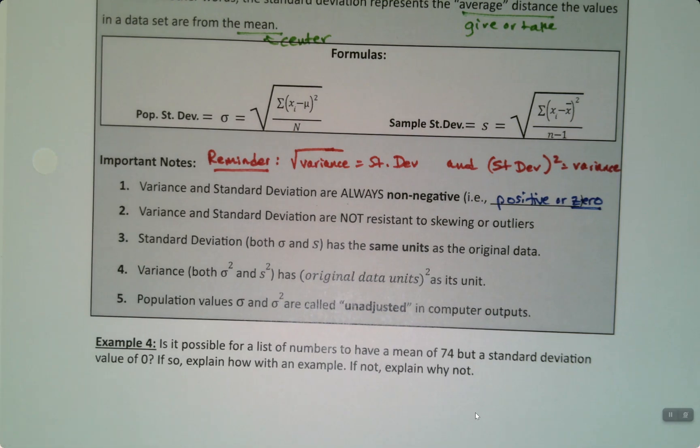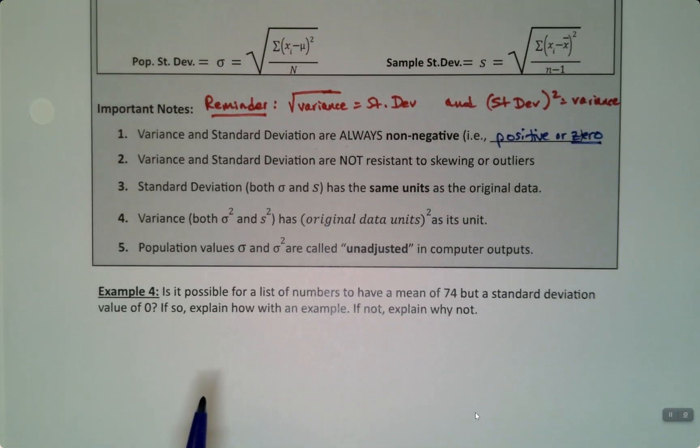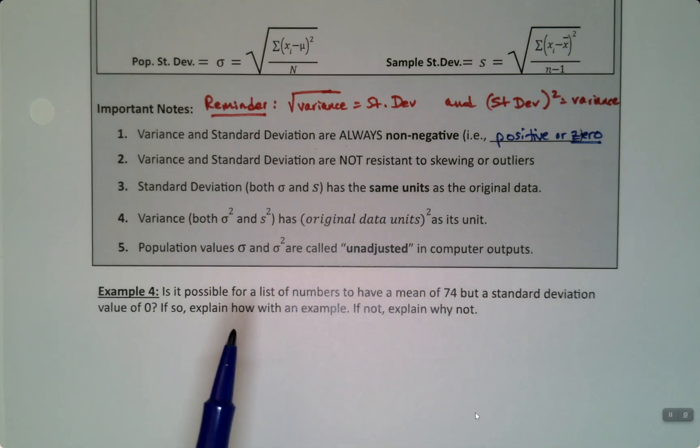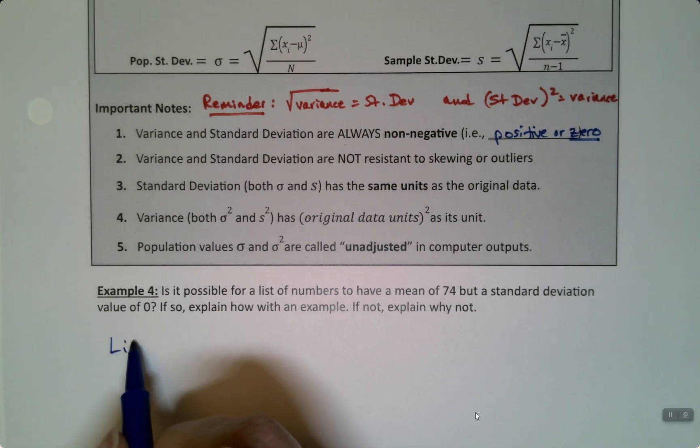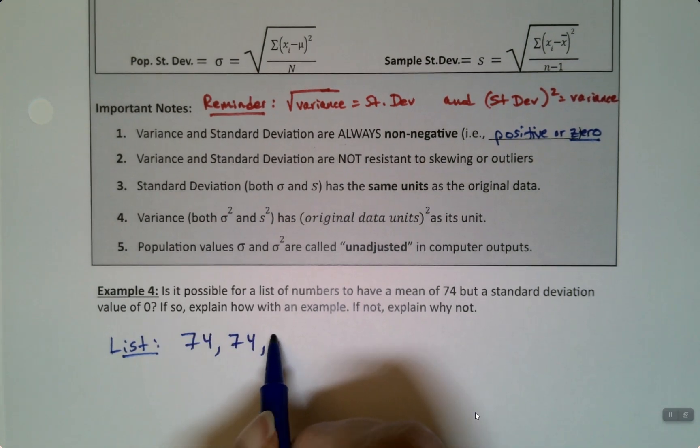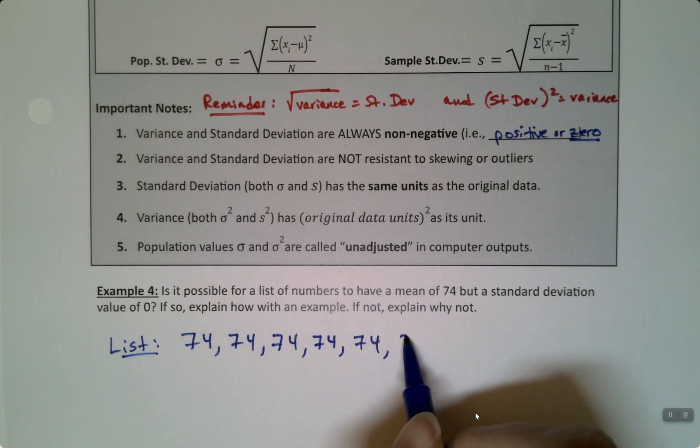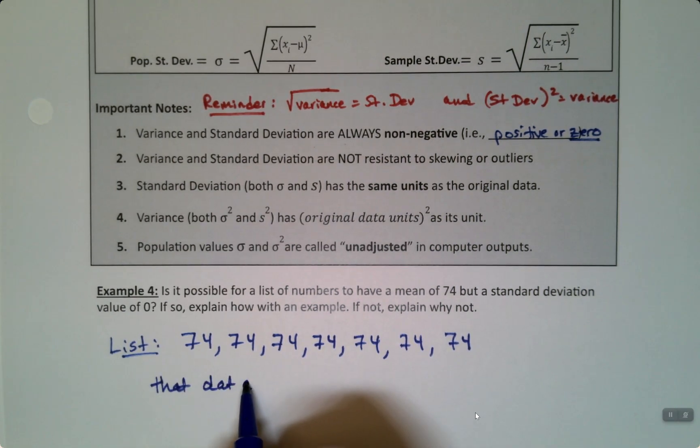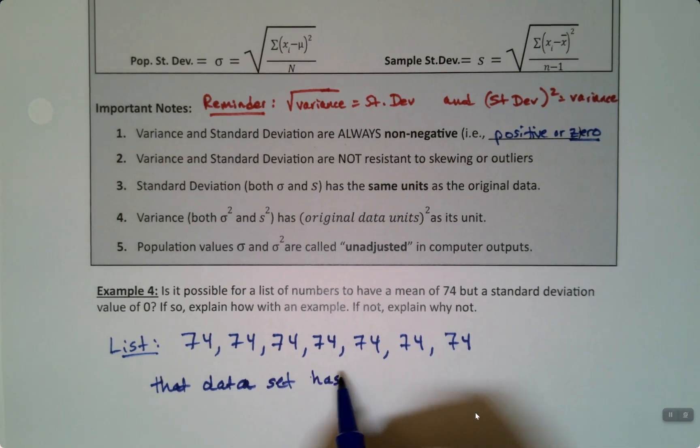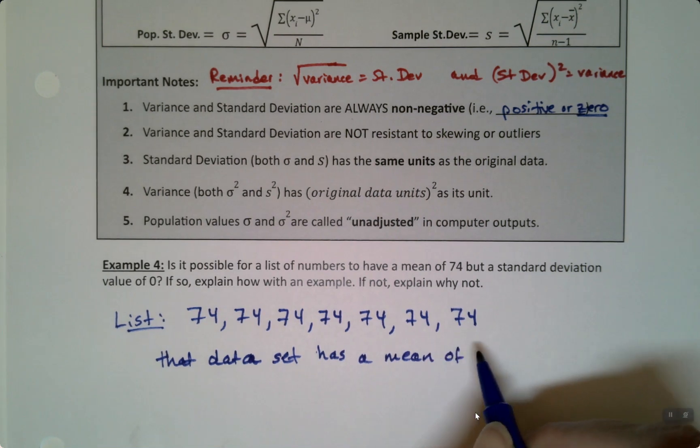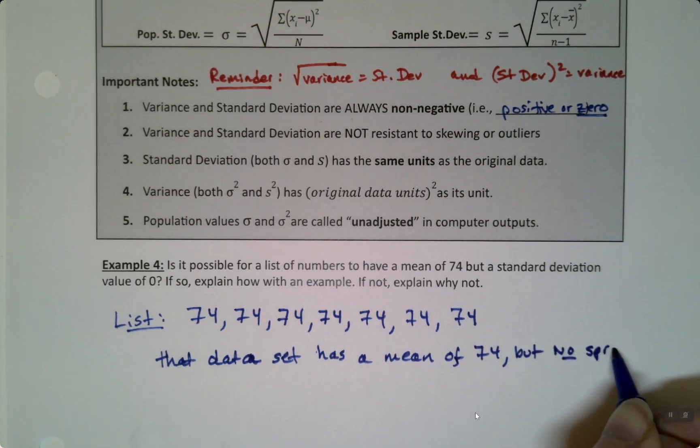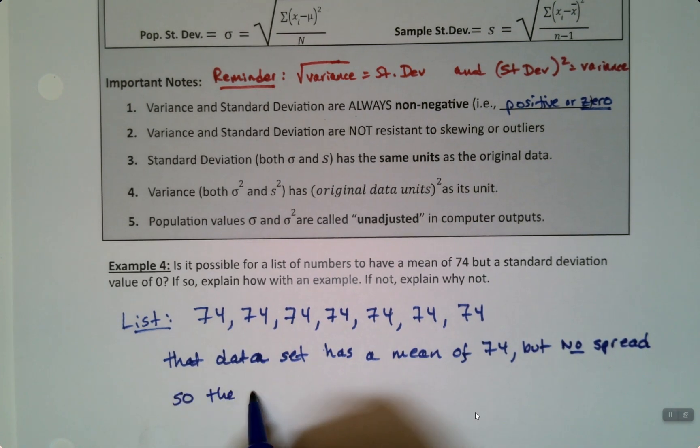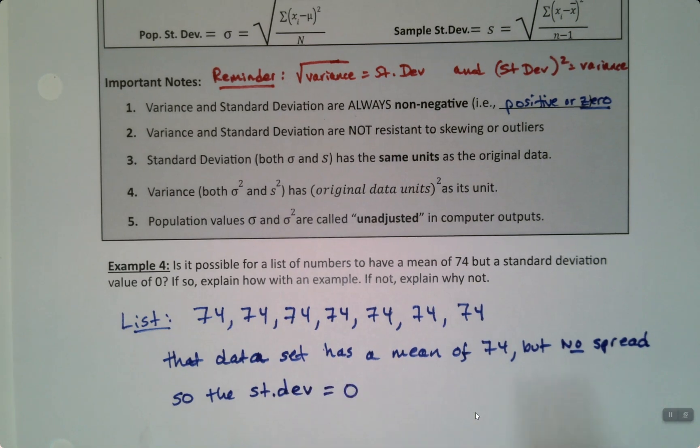So how would you have zero? It would mean that your data set has no variation. So is it possible to have a list of numbers to have a mean of 74 but have a standard deviation of zero? And the answer is, sure. So if the list is 74, 74, 74, 74, 74, 74. That data set has a mean of 74, but it has no give or take because everybody scored 74. It has no spread. So the standard deviation would be zero.